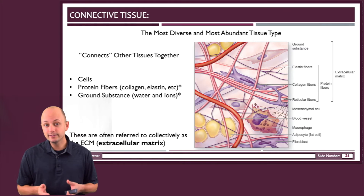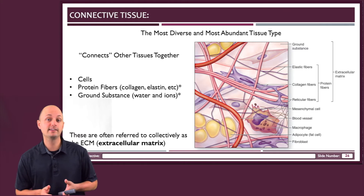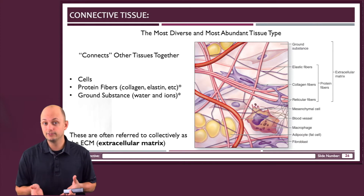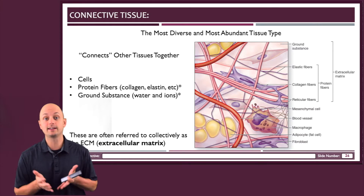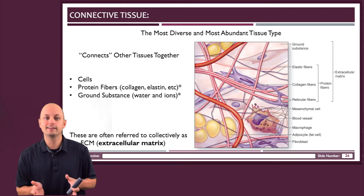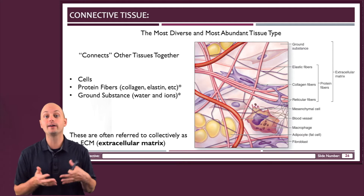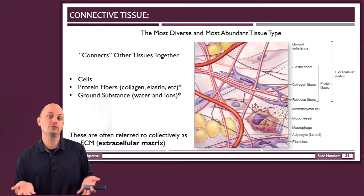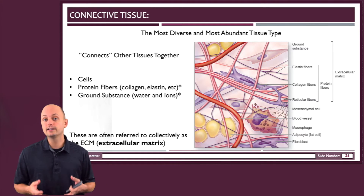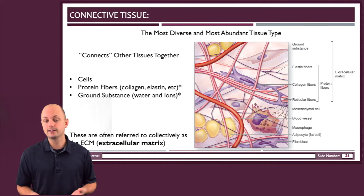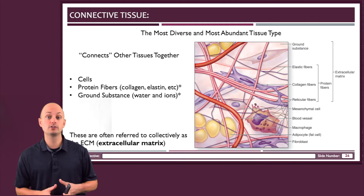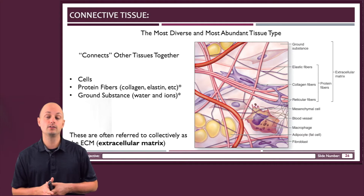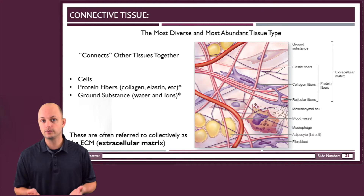The most abundant tissue type inside the body is connective tissue, because like its name suggests, connective tissue binds other tissues to each other. There's a lot of diversity in connective tissue, especially in comparison to the other tissue types that we talked about.